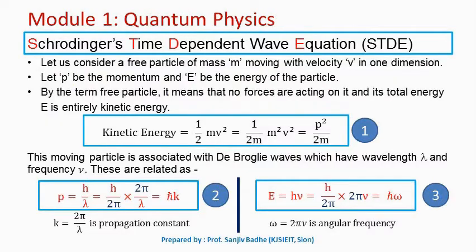Another form of Schrödinger equation is Schrödinger's Time Dependent Equation, STDE. This STDE can be obtained by representing momentum and energy as operators and making them operate on the wave function psi. Let us see how this Schrödinger's time dependent equation is obtained now.